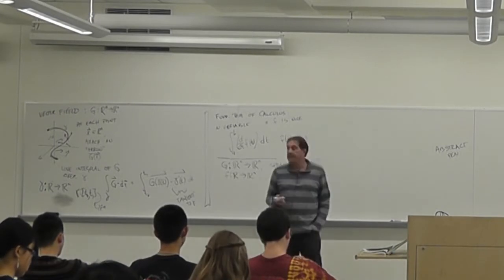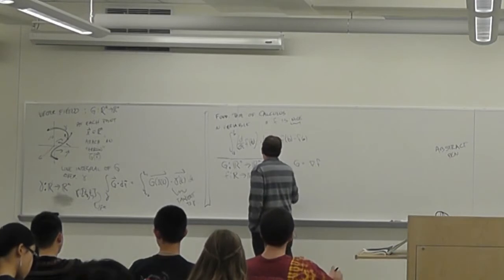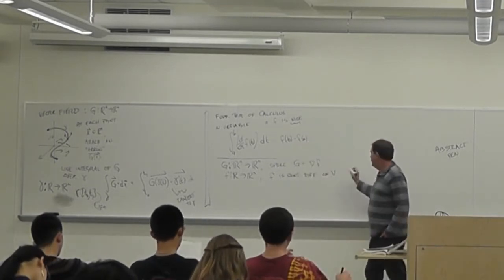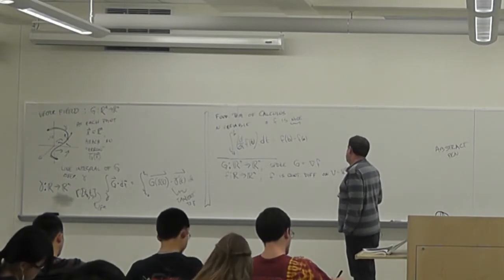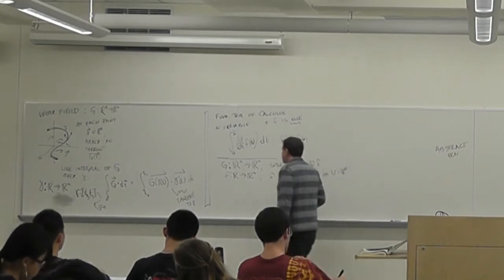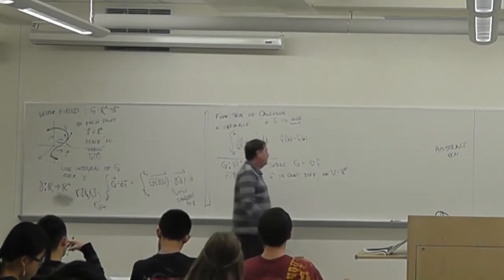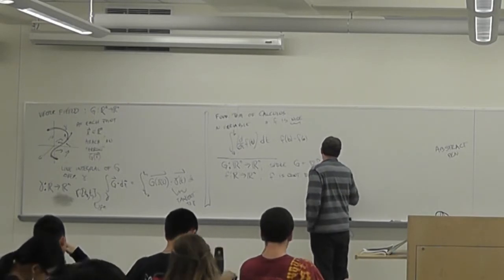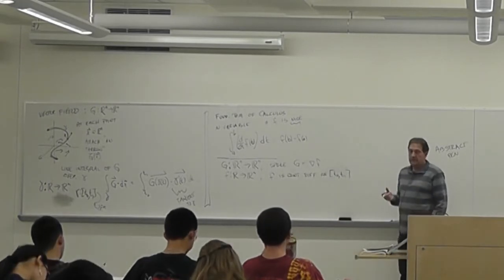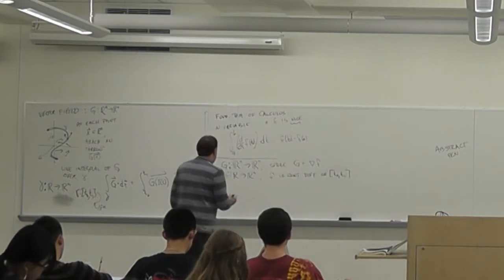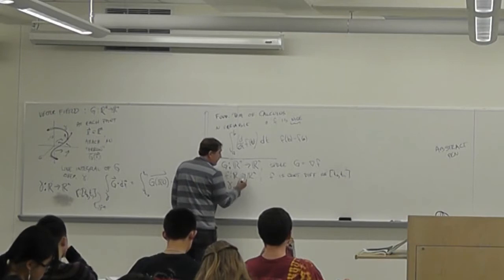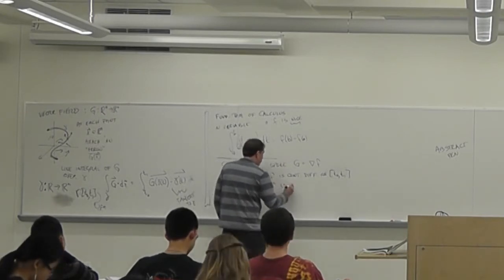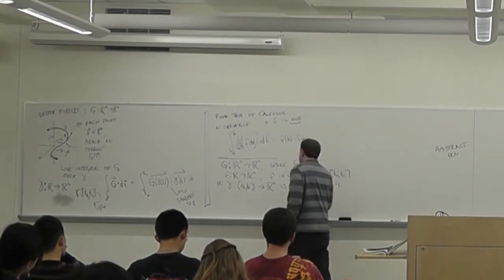And suppose that g is the gradient of some function f, where f is a function from R^n to R. And I need some conditions on f. What I need is that f is continuously differentiable on some set u, which is a subset of R^n. So f is continuously differentiable on some region. And so we also have gamma, which takes some interval [a, b] into R^n as a smooth curve, contained in that region.